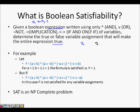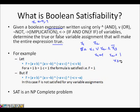For example, x1 and x2 are our variables. If we have a function like x1 OR x2 AND NOT x3, and if x1=1, x2=1, x3=0, then phi will be satisfied because 1 OR 1, AND NOT 0 (which is 1), equals 1. The operators involved are AND, NOT, OR, implication, and if-and-only-if.